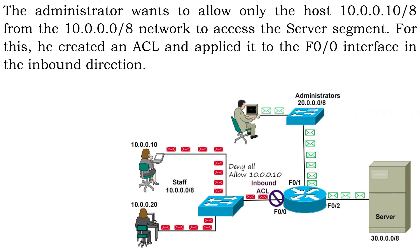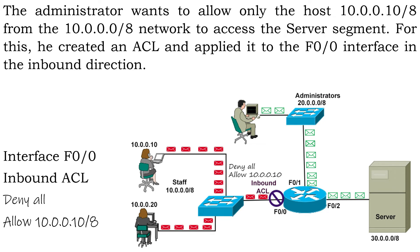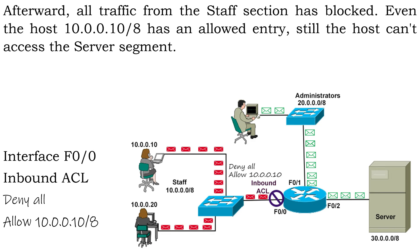Let's understand it through our example. The administrator wants to allow only the host 10.0.0.10 from the 10.0.0.0/8 network to access the server segment. For this, he created an ACL and applied it to the F0/0 interface in the inbound direction. Afterward, all traffic from the staff segment was blocked — even the host 10.0.0.10, which has an allow entry, still cannot access the server segment.